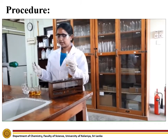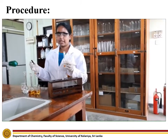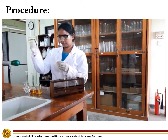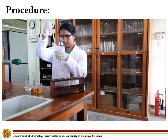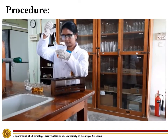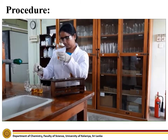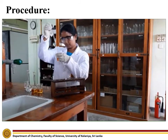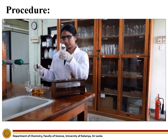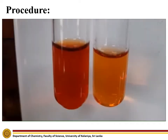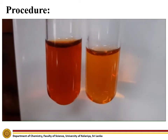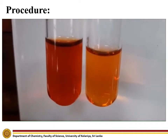To the third test tube, add 10 drops of ferric nitrate solution. Compared to the control, the third test tube turned into a blood red solution.